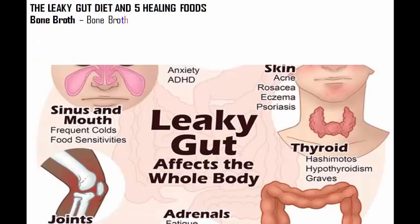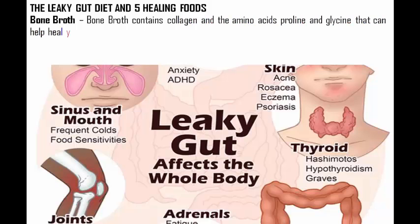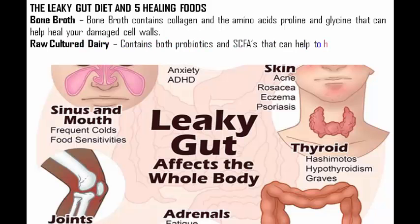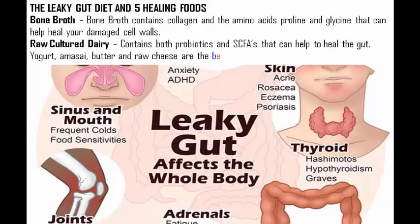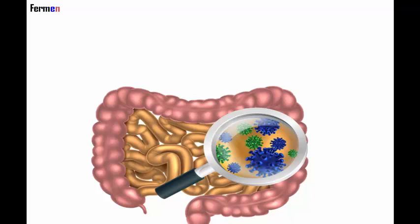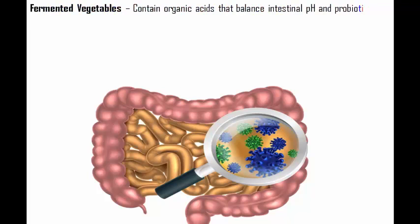The leaky gut diet and five healing foods. One: bone broth — it contains collagen and the amino acids proline and glycine that can help heal your damaged cell walls. Two: raw cultured dairy — it contains both probiotics and short-chain fatty acids (SCFAs) that can help heal the gut. Yogurt, amasai, butter, and raw cheese are the best options.